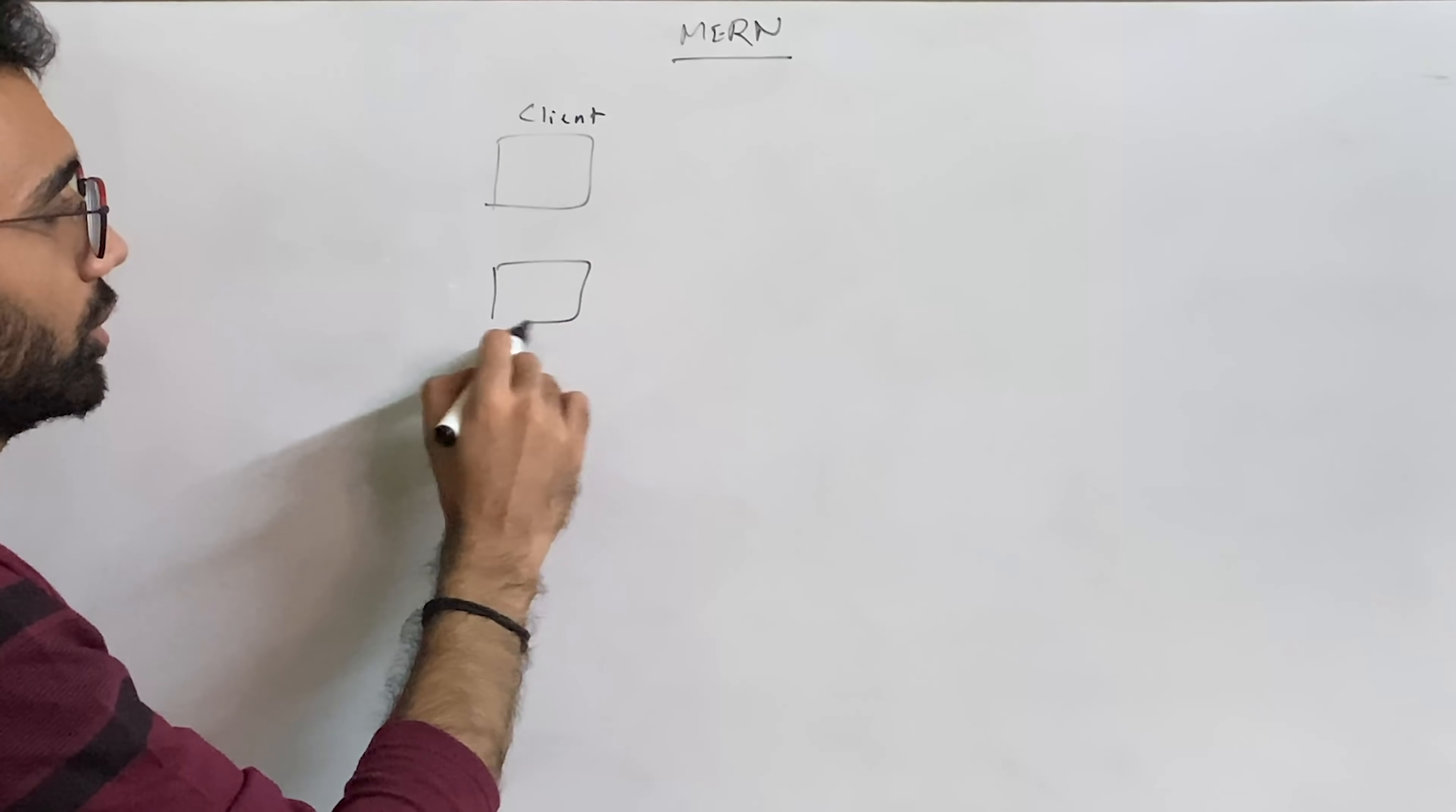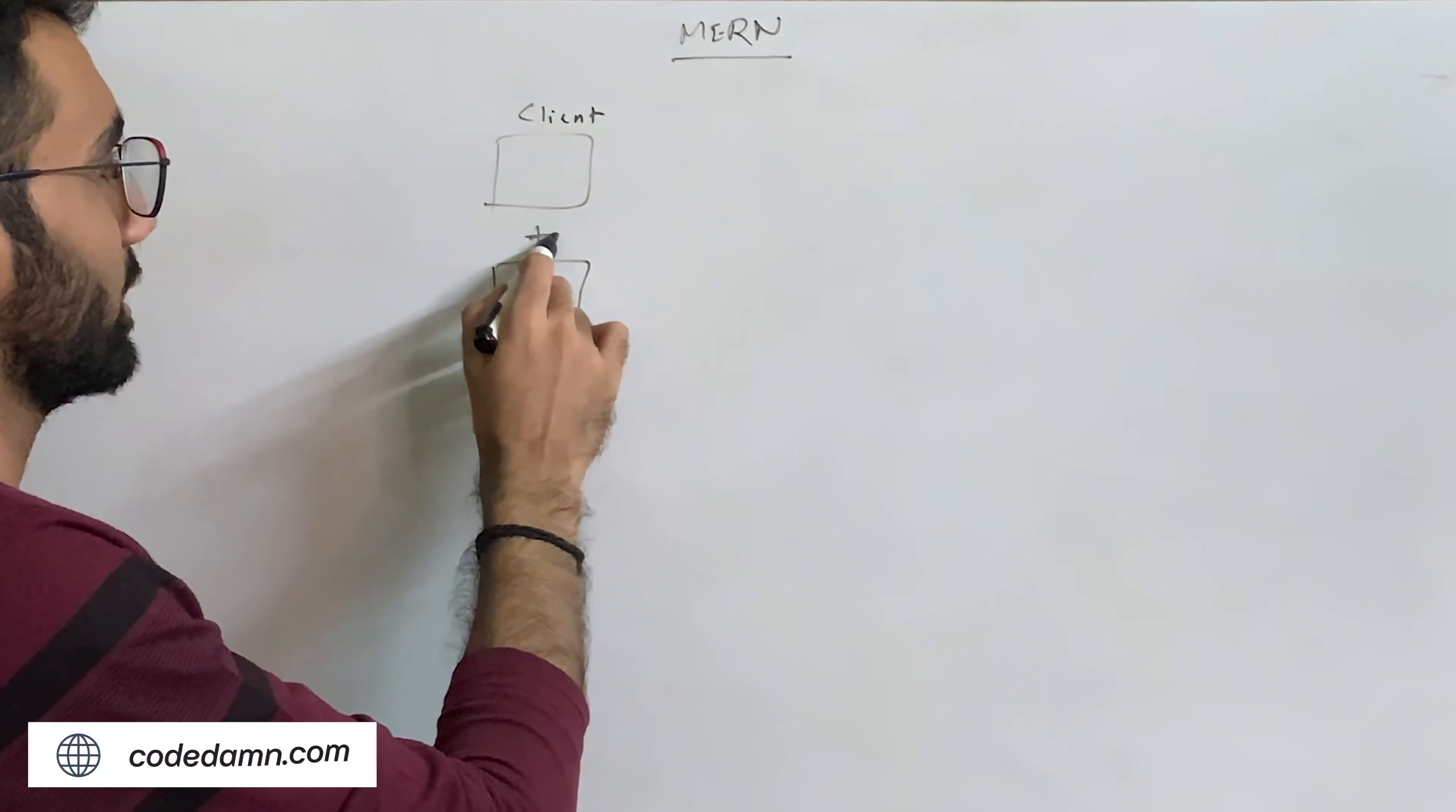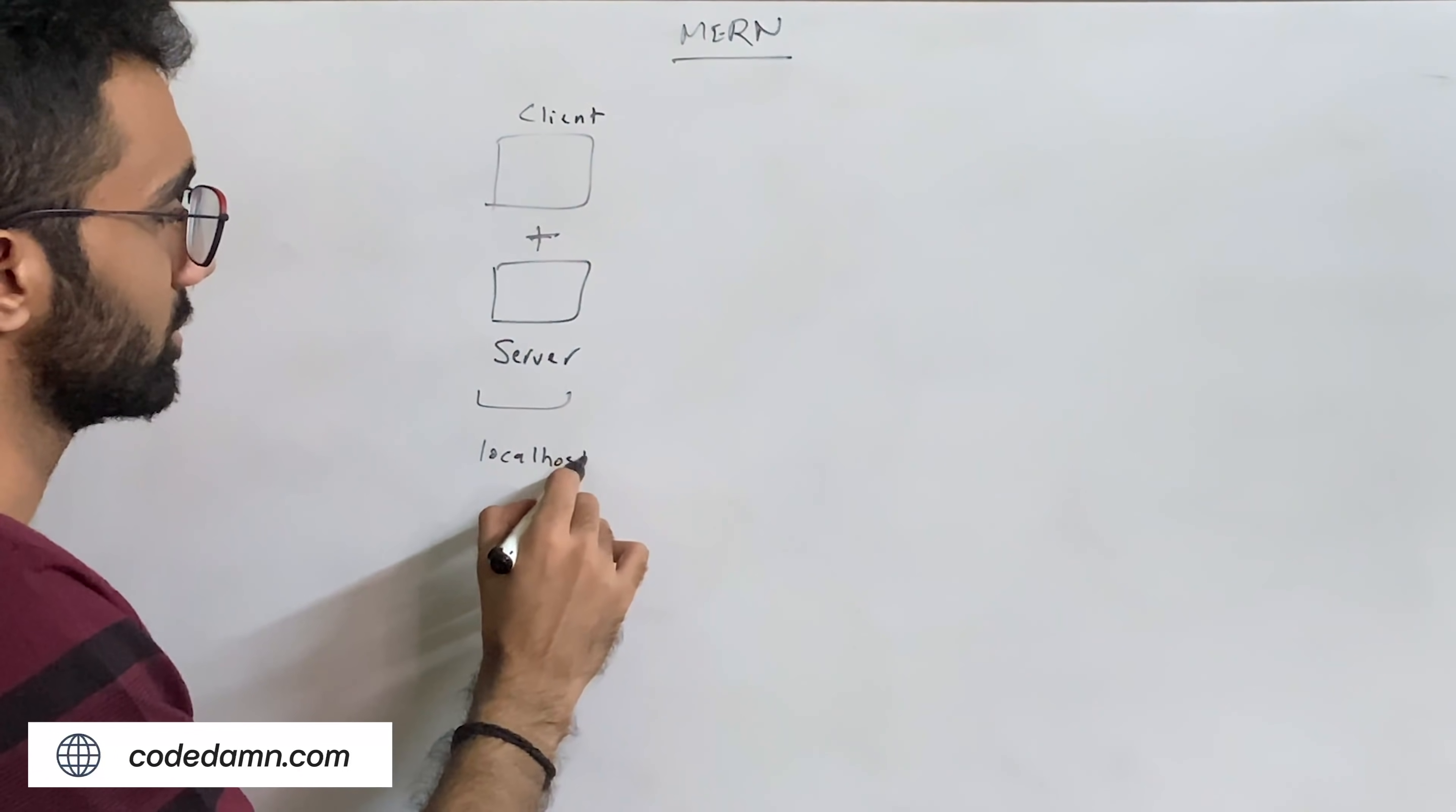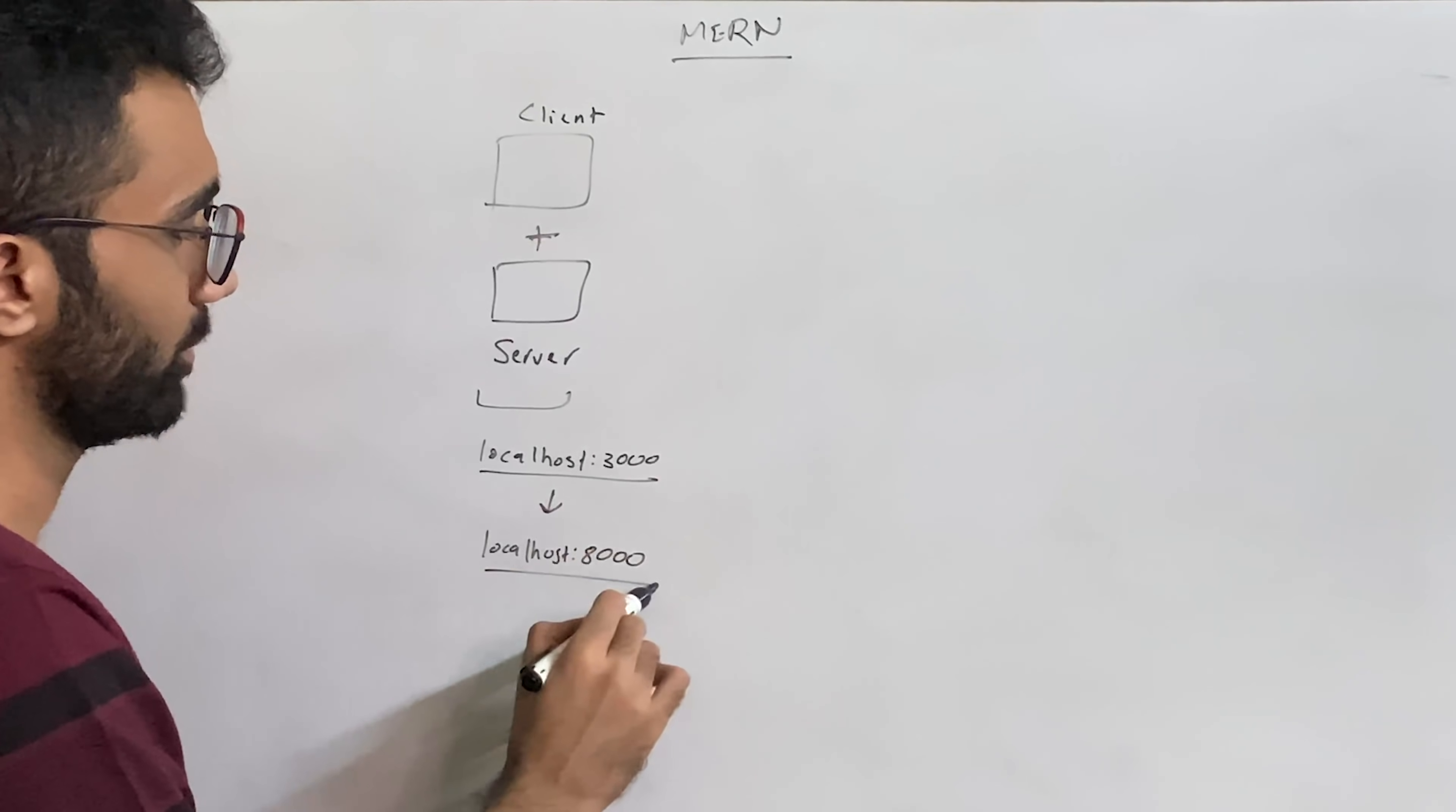And the second thing you will have is your server here, right? And most tutorials will actually end up here where they just show you how to connect a client and a server and how you can run it on localhost port 3000, and that's it. Maybe you connect to a localhost port 8000 where your API server is running, but that's it.